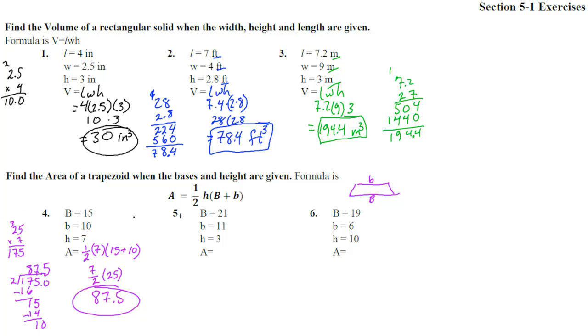Number 5. Big B is 21, little b is 11, and h is 3. So we get one half times 3 times 21 plus 11. That's 32 times 3 times one half. We're going to take one half times 32 first. One half times 32 is 16. So we end up with 16 times 3, which gives us 48. We could have done one half times 3, which would be 3 halves, and then 3 times 32 would be 96 divided by 2, but we'd get 48.